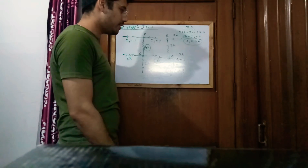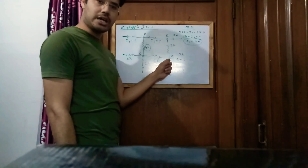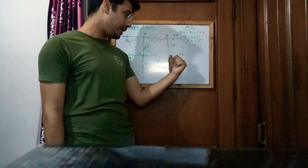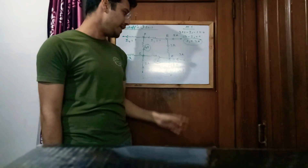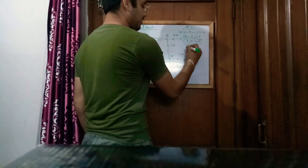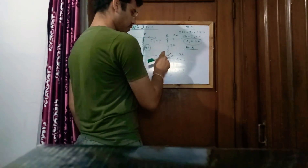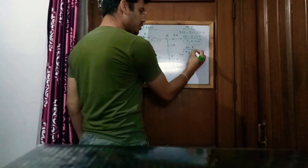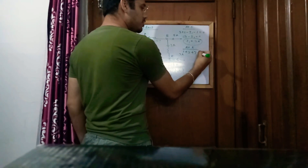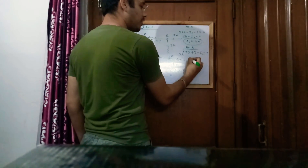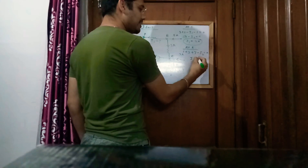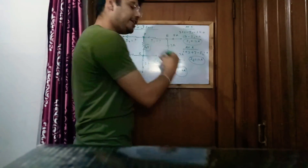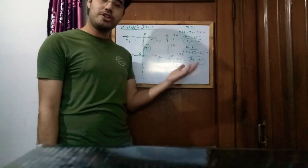Now I1 is 4 ampere. Let's talk about junction R. At R: 1 ampere is incoming, 3 ampere is incoming, and 7 ampere is incoming, but I2 is outgoing. So 1 plus 3 plus 7 minus I2 equals 0, which gives I2 equals 11 ampere.